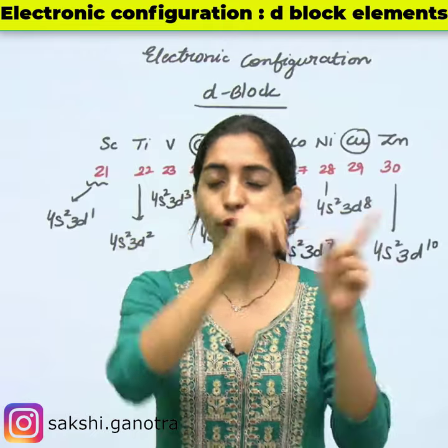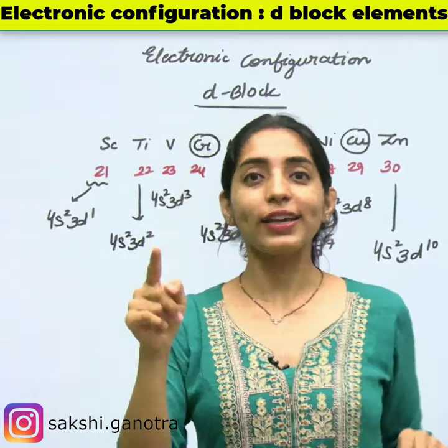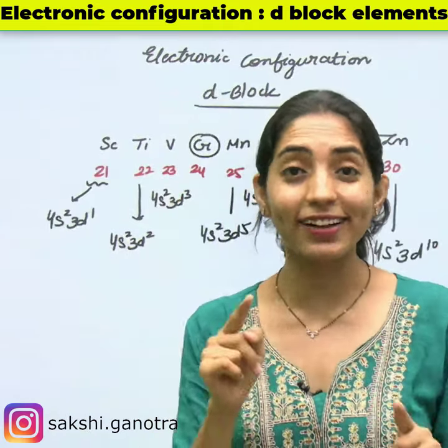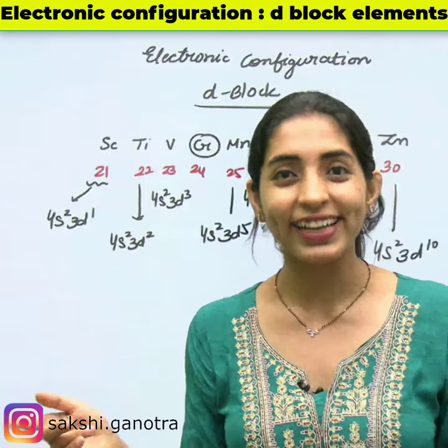Cobalt, 27 — 4s2 3d7. Nickel, 28 — 4s2 3d8. Zinc, 30 — 4s2 3d10. That's it.